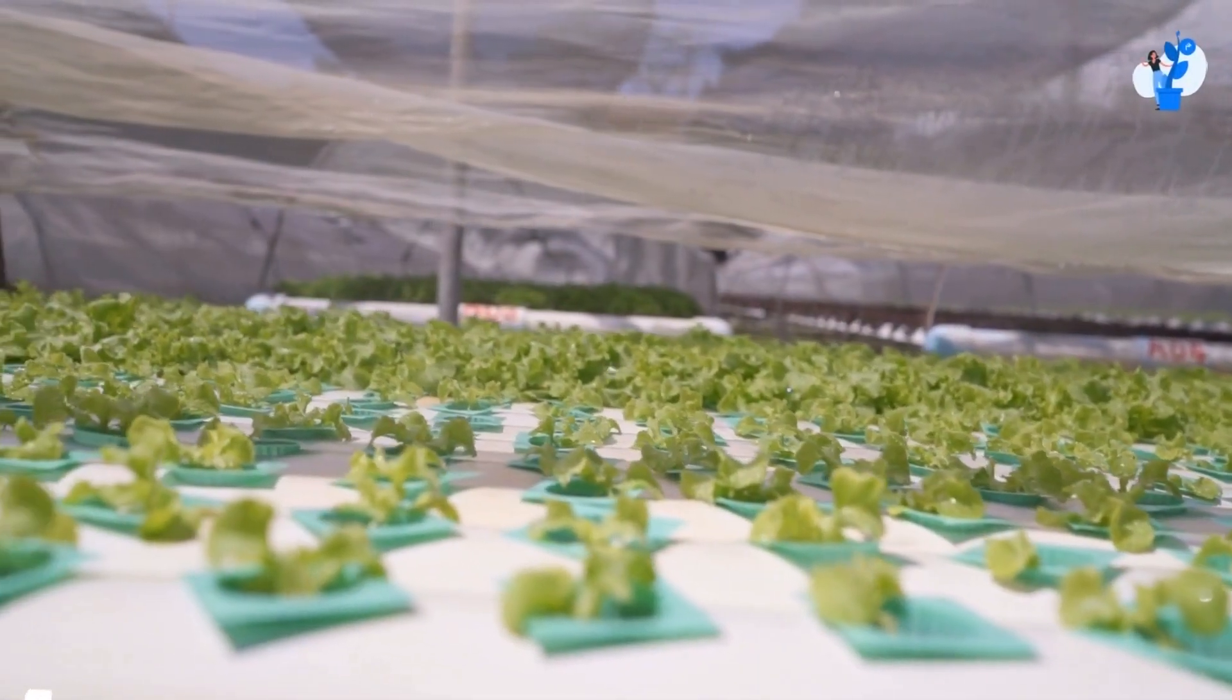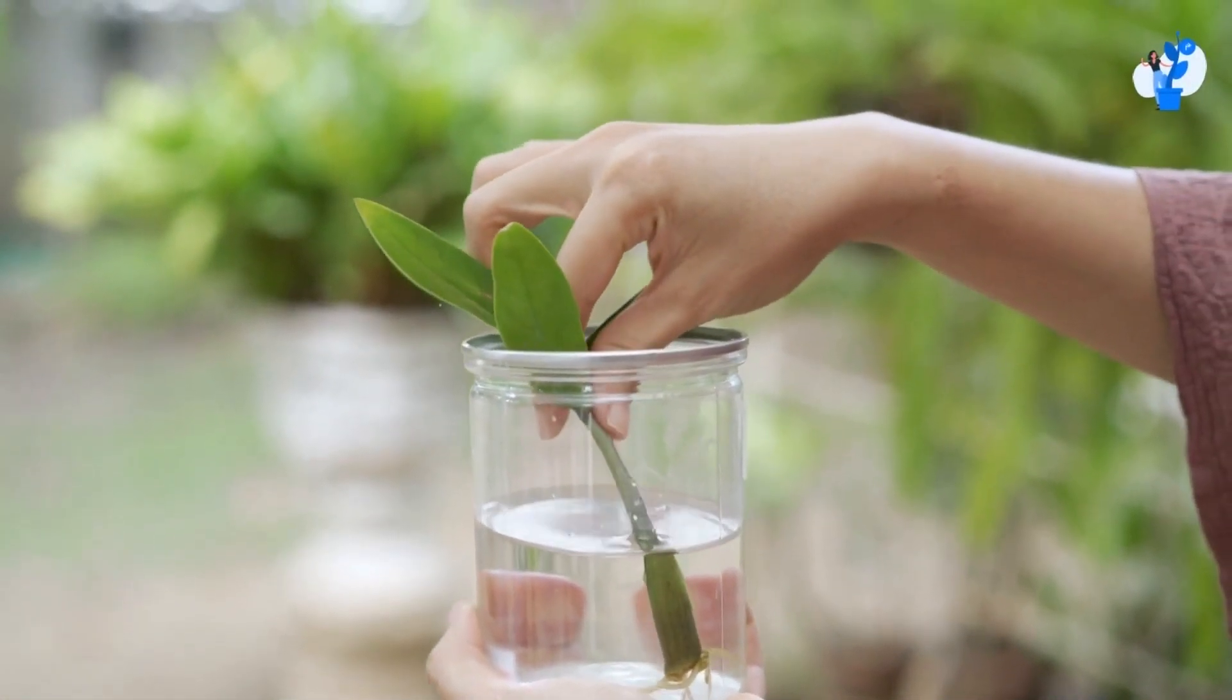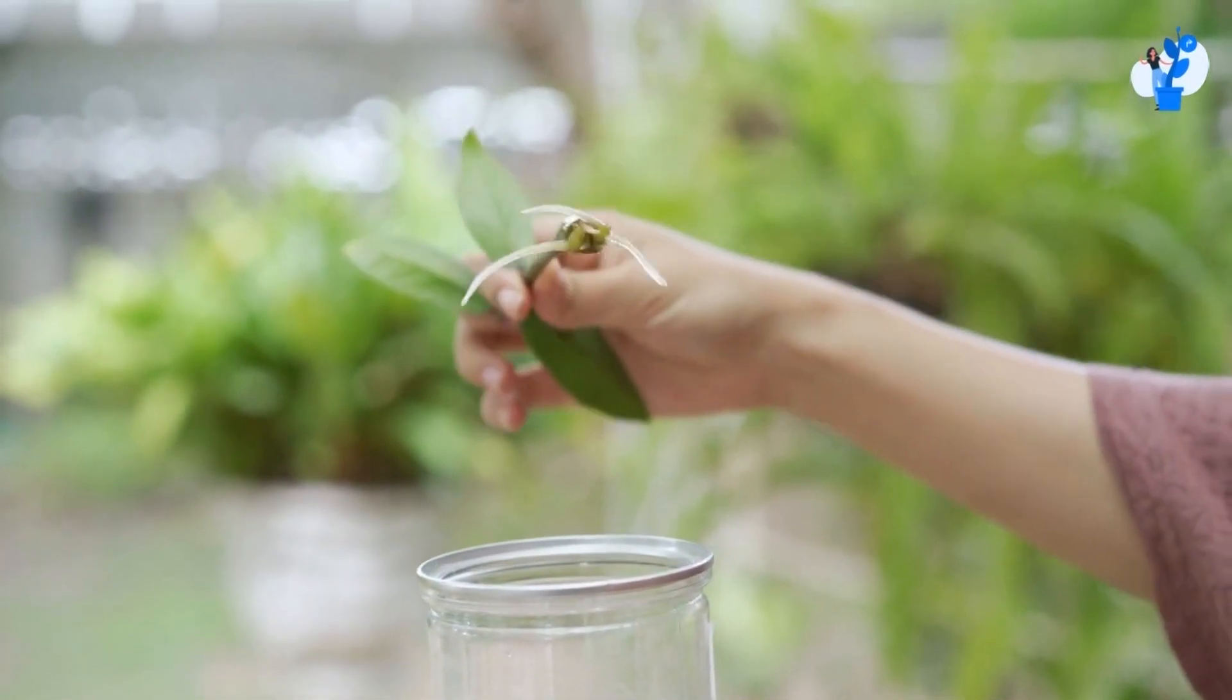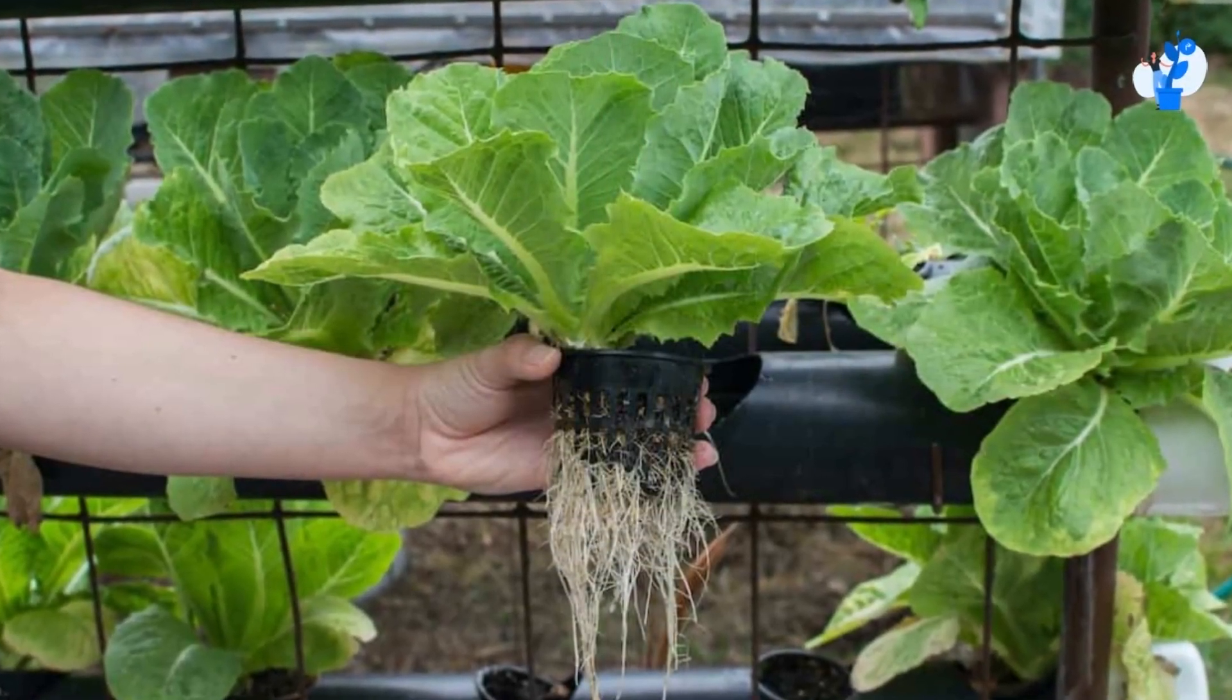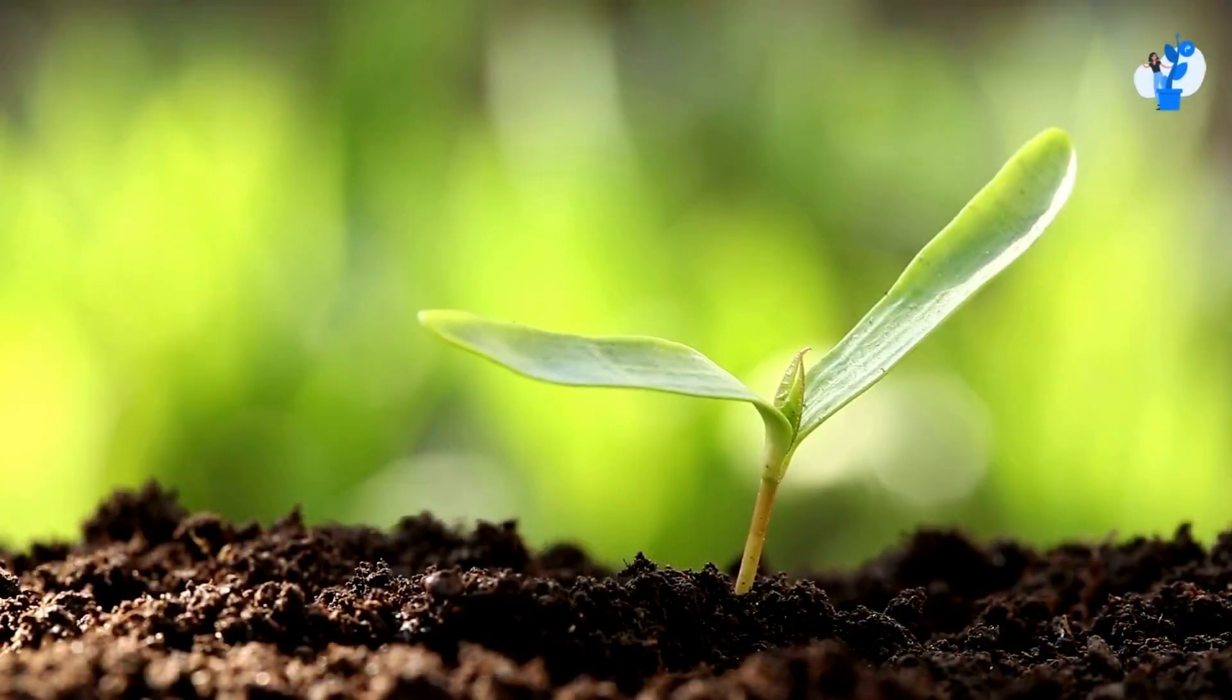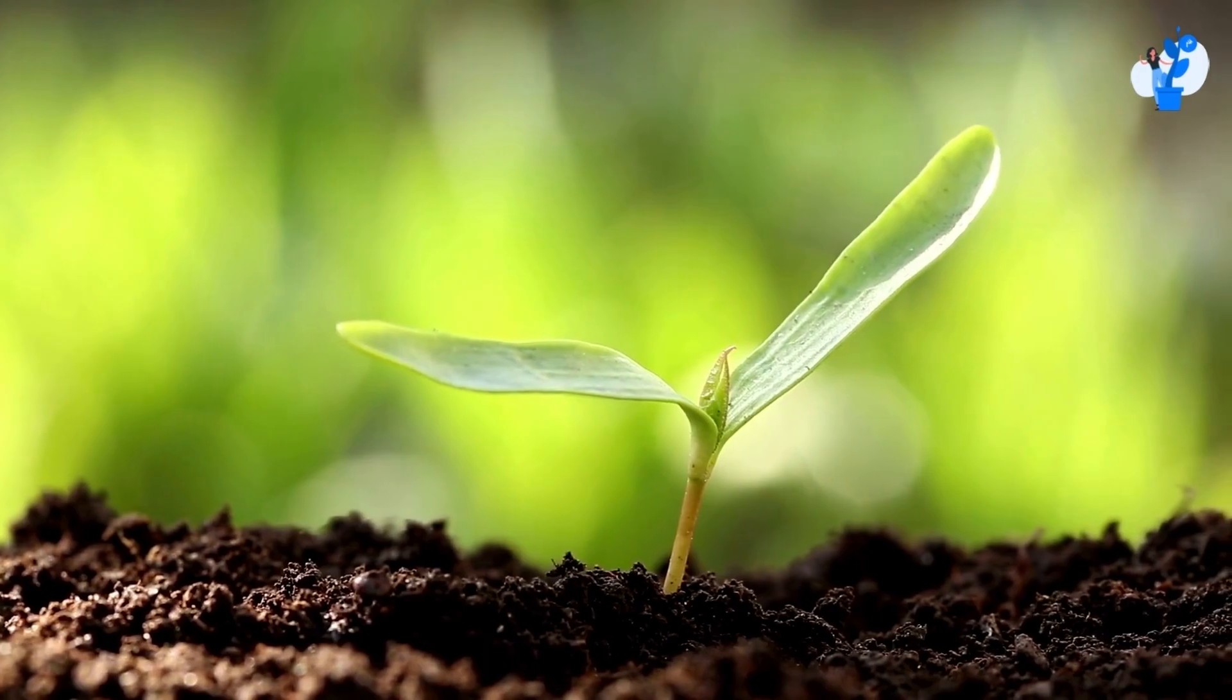So where does hydroponics become different? In soil, roots struggle to find nutrients and uptake them, because the plant is a semipermeable membrane. Nutrients can go inside the plant, but the plant cannot deliver them outside. So the semipermeable membrane needs to struggle in soil to find nutrients.